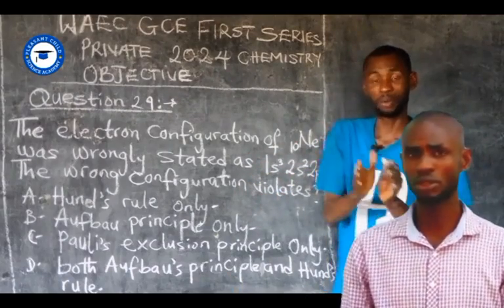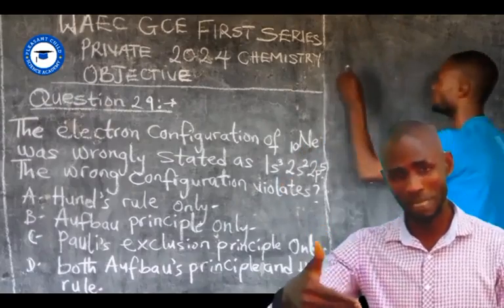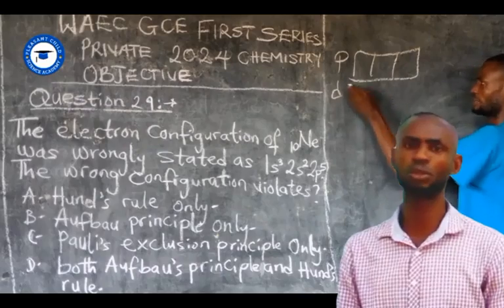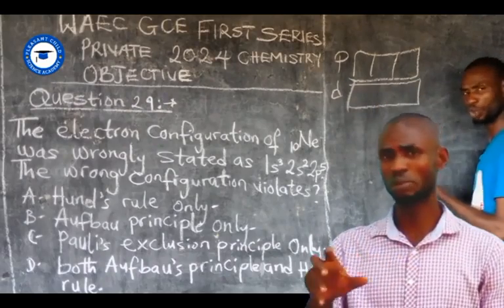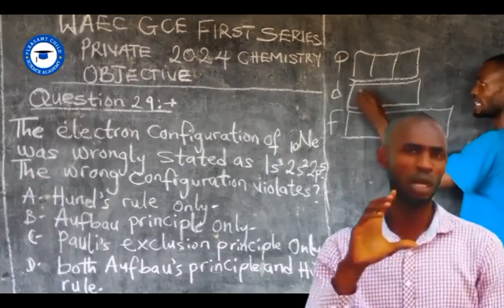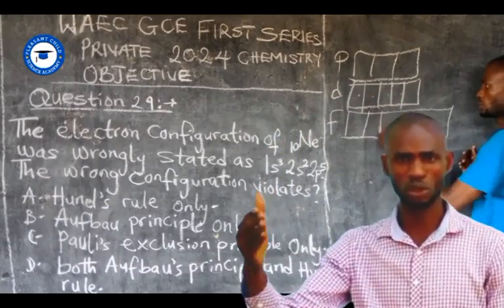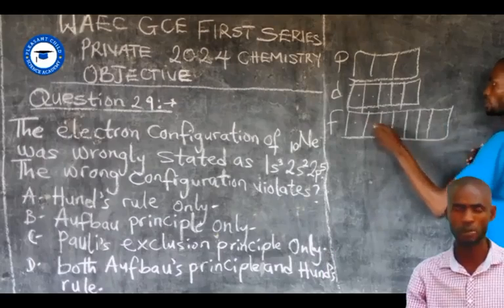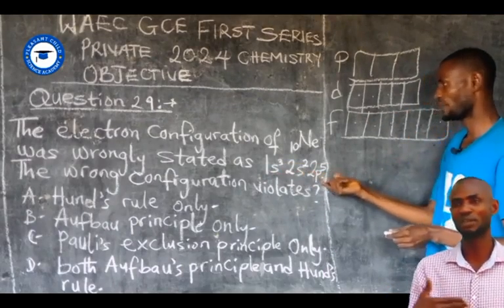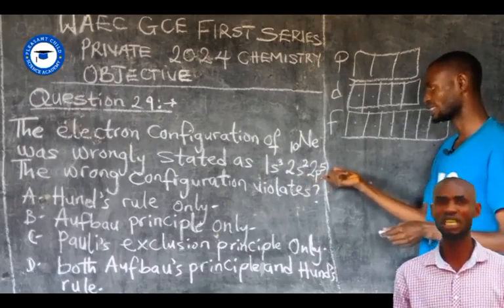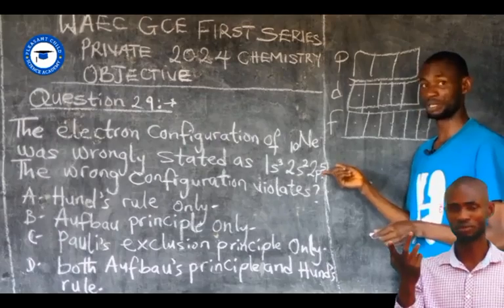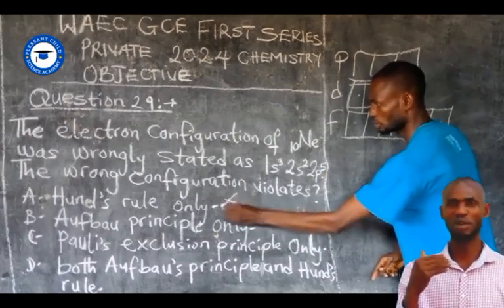Degenerate orbitals include the P orbital, which has 3 sub-orbitals; the D orbital, which has 5 sub-orbitals; and the F orbital, which has 7 sub-orbitals. These are all degenerate orbitals. Since we are not drawing the P orbital here, option A is not correct. Option B — the Aufbau principle only. The Aufbau principle states that electrons enter orbitals in order of increasing energy level, which is why we have 1s before 2s. So this does not violate the Aufbau principle either.